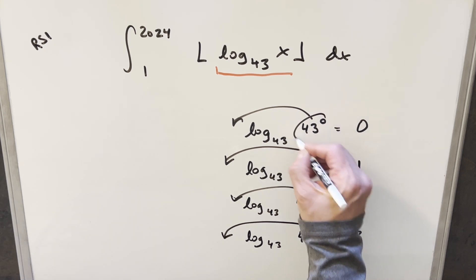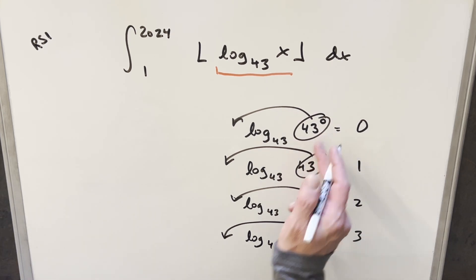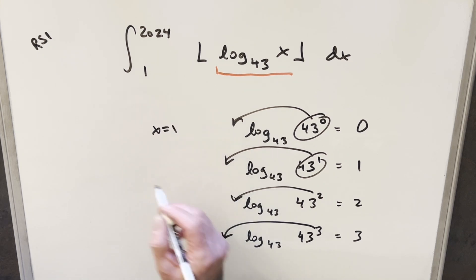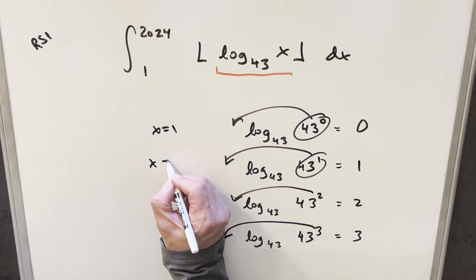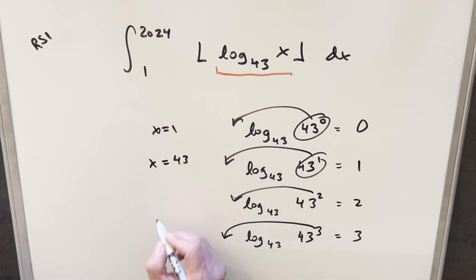But then in each of these, we can find our x value is just going to be this here. So like 43 to the 0, our x value here is 1 at this point. Here, our x value is just 43. Here, our x value is 43 squared. That's the same thing as 1849.